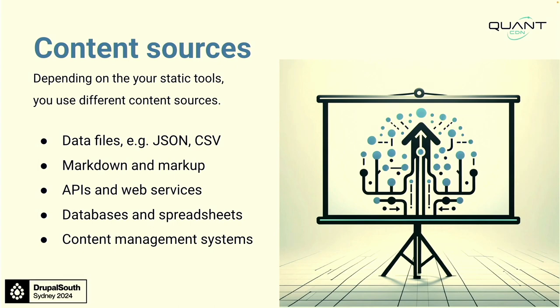Looking at content sources: there are plenty of different ways to author content for a static website. You can use data files in the repository — you can manage Markdown, give editors access to a GitHub repo, and they can create content directly with Markdown files in the Git interface. Or you can make an API backend — this is what Dries was touching on this morning with web services and decoupled Drupal. You can have a Drupal instance that's locked down, just serving a content API that your front end reads from to build different web experiences.